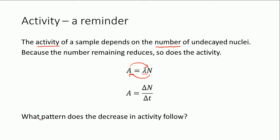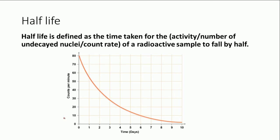What we're going to look at here is the pattern that this follows. We're going to start off by looking at half-life. The half-life of a radioactive sample is defined as the time taken for the activity of that sample to fall by half. You can substitute the word activity by the number of undecayed nuclei or indeed by the count rate, which is the number that you're actually detecting in your Geiger-Müller tube per second.